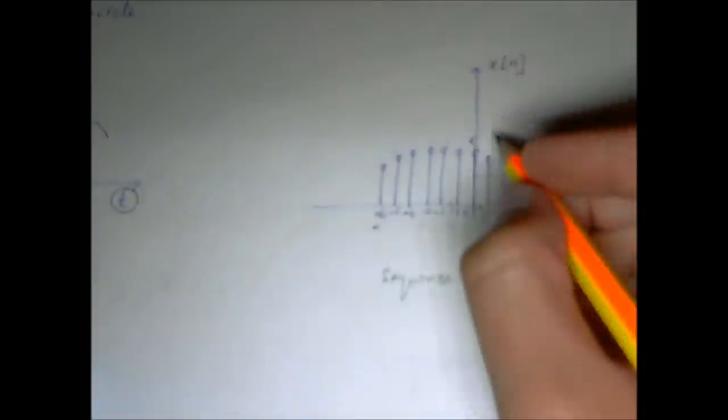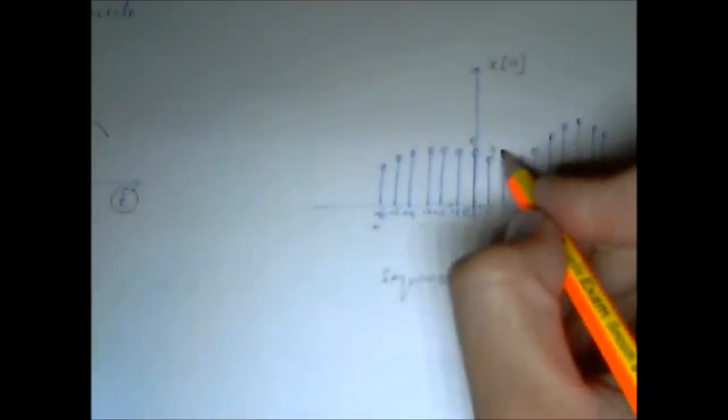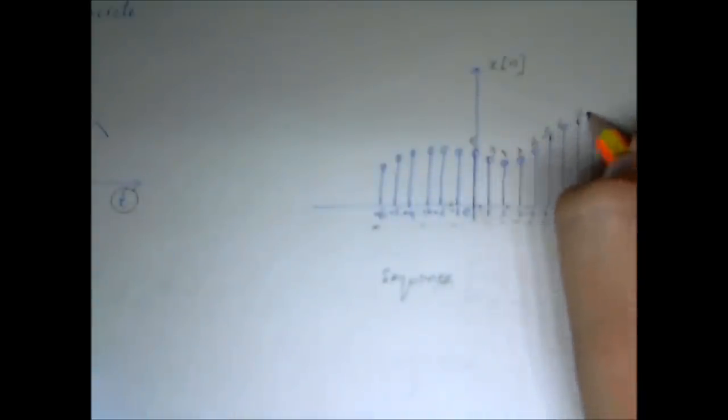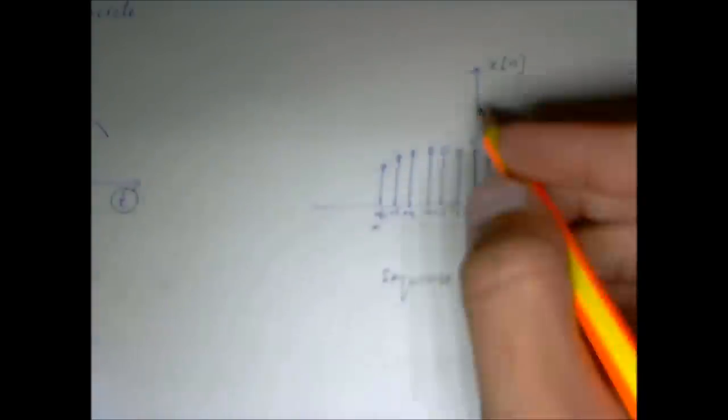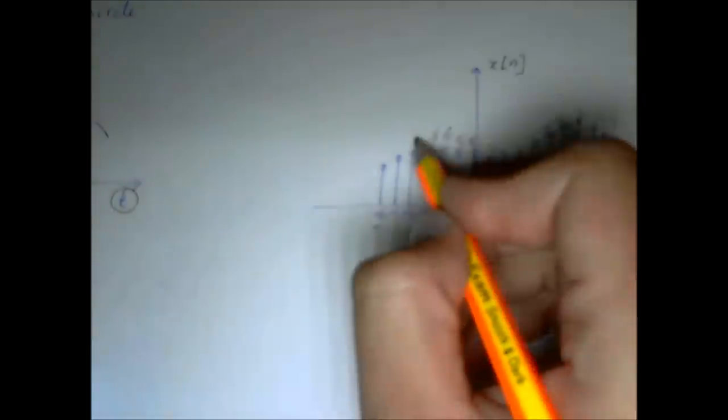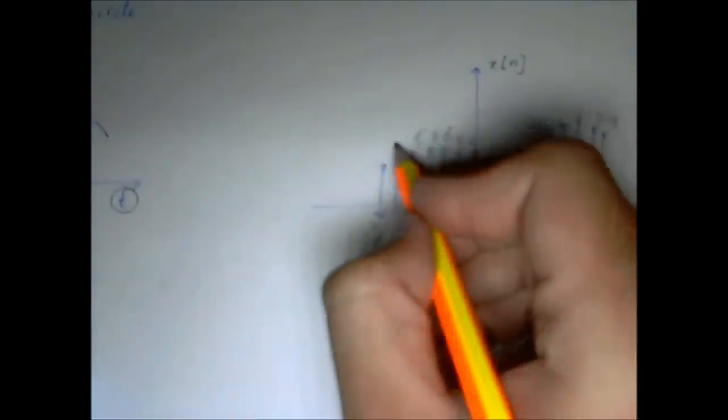However, a discrete time signal can be defined using numbers. Let's just assign some numbers to this. Let's say the value at 0 is 5. Let's say this is 4, 3, 3, 4, 5, 6, 7, 8, 9. So this is let's say again 5, this is 6, 6, 5, 4, 3.